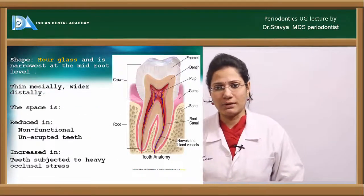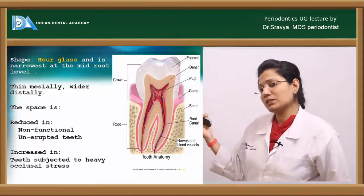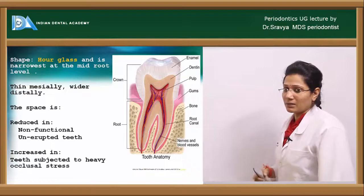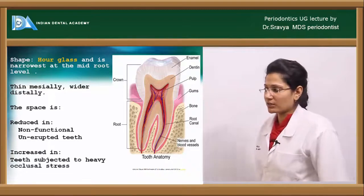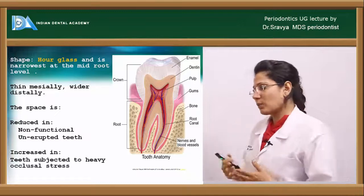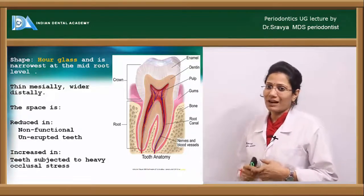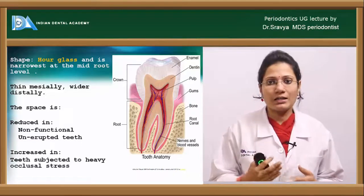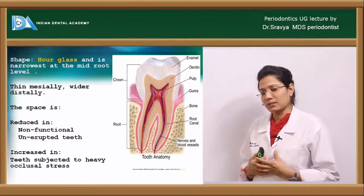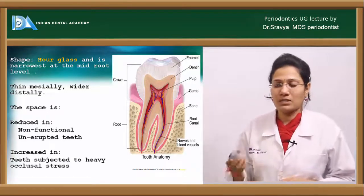The shape of the periodontal ligament is hourglass-shaped because it is narrowest at the mid-root level. It is thinner on the mesial surface compared to the distal surfaces. The periodontal ligament space gets reduced when teeth are in non-function or in unerupted teeth, whereas teeth in hyperfunction or subjected to trauma from occlusion and high occlusal forces have a widened periodontal ligament space.